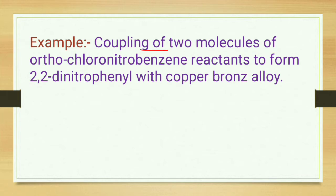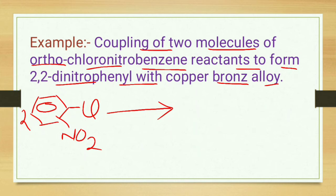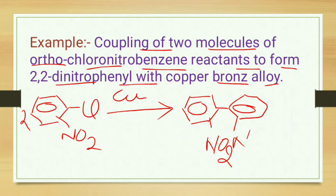For better understanding of this reaction, let's take an example: the coupling of two molecules of ortho-chloro nitrobenzene as reactants to form 2,2'-dinitrobiphenyl with copper bronze alloy. Here, two molecules of ortho-chloro nitrobenzene — where chlorine is attached at the ortho position — are coupled with each other in the presence of copper to form 2,2'-dinitrobiphenyl.